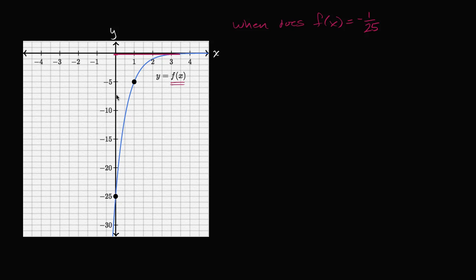Since we know that f of x is an exponential function, we know it's going to take the form f of x equals our initial value a, times our common ratio r, to the x-th power. The initial value is straightforward — that's going to be the value the function takes on when x is equal to zero. You can even see it here: if x is equal to zero, r to the x would just be one, and so f of zero will just be equal to a.